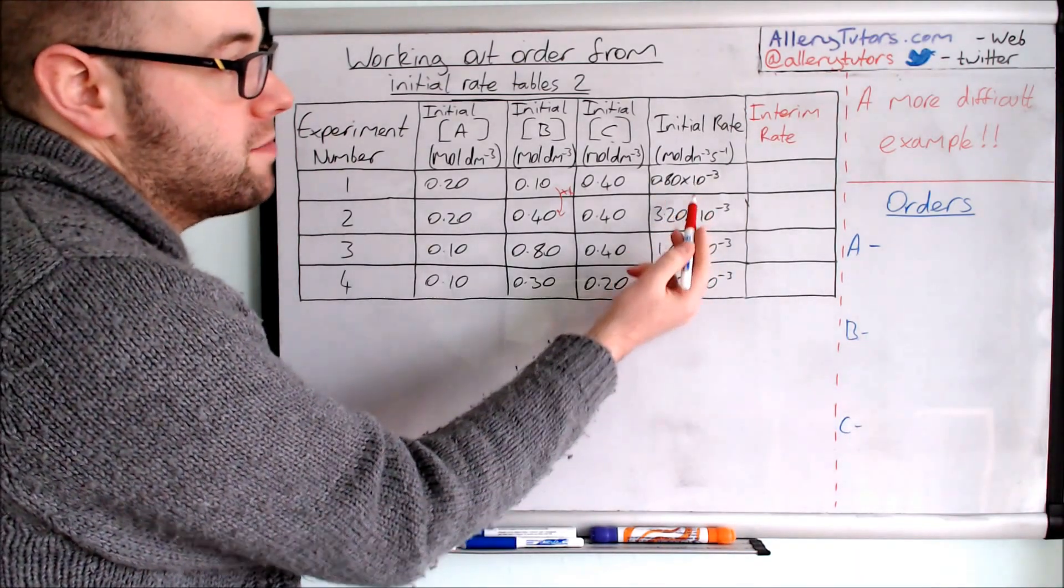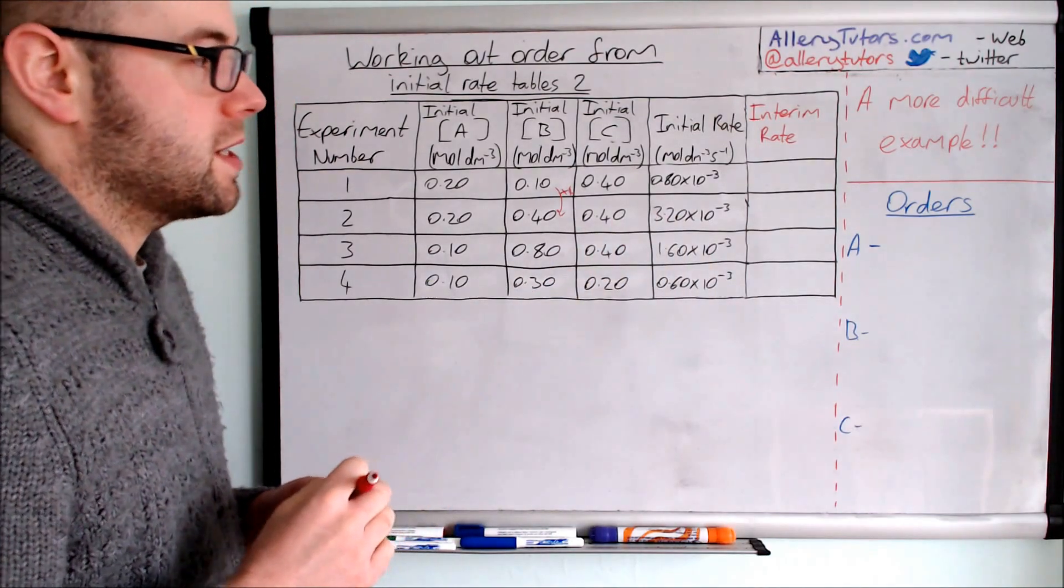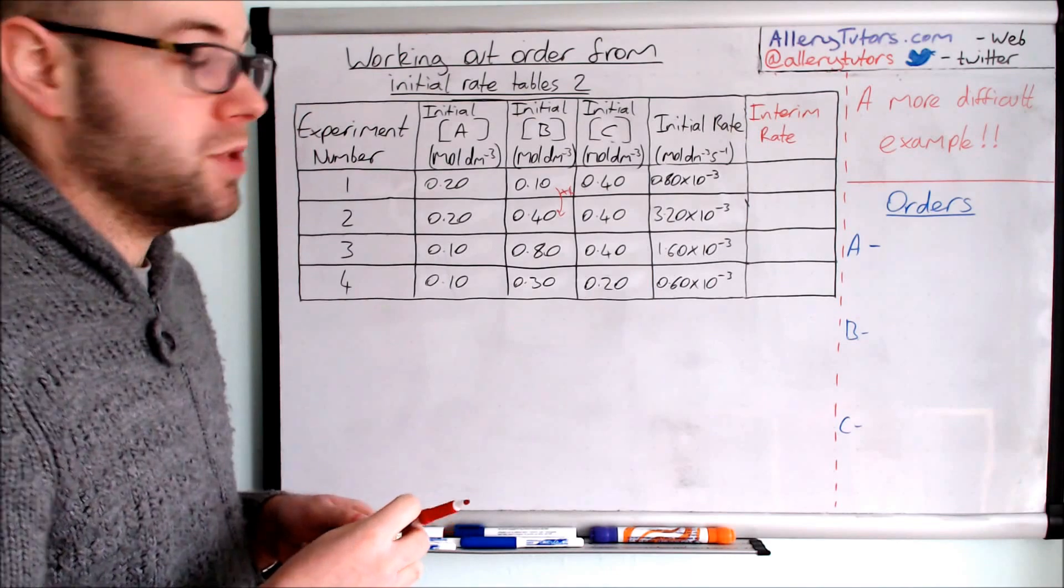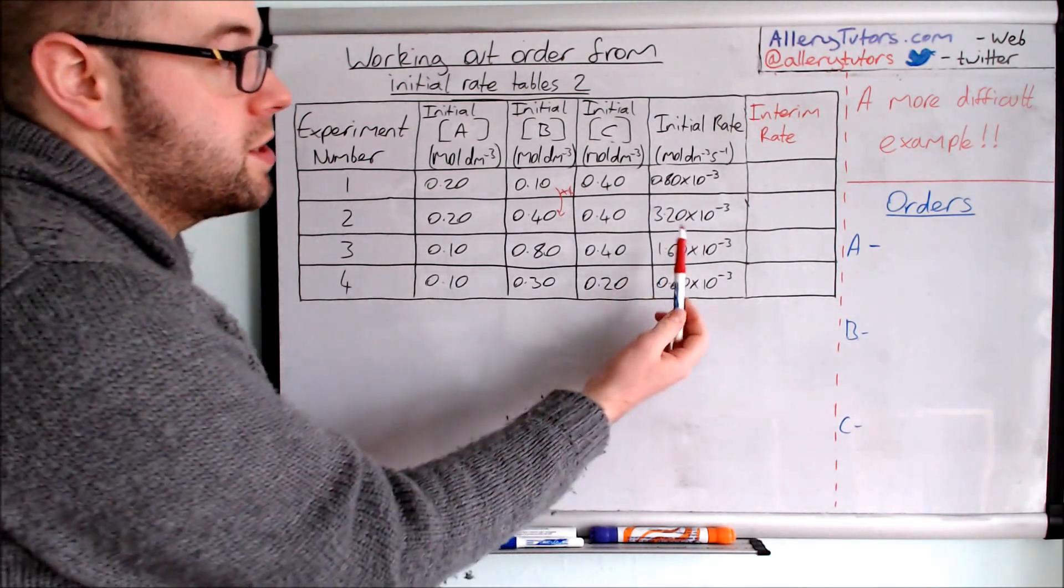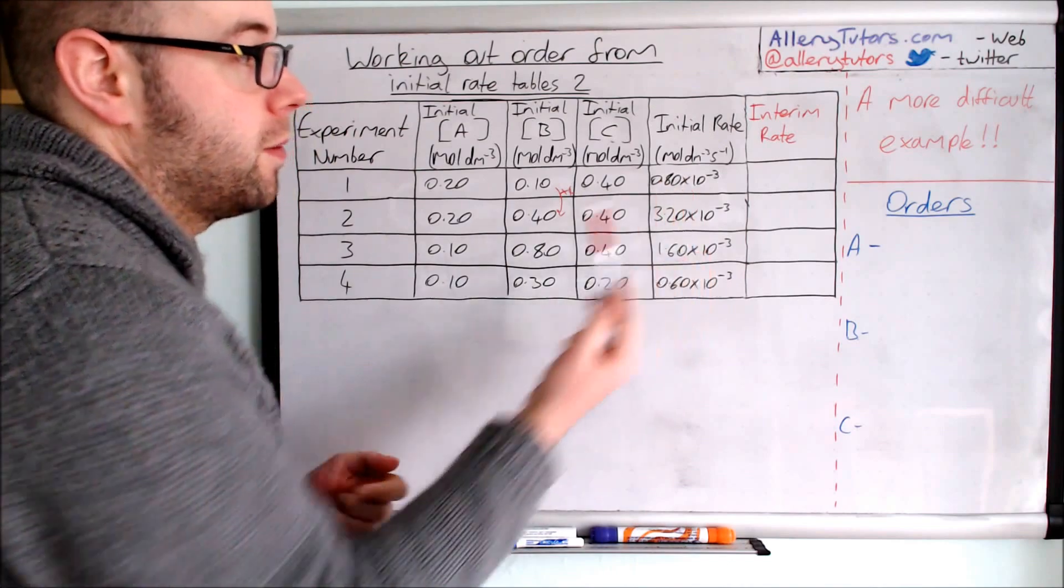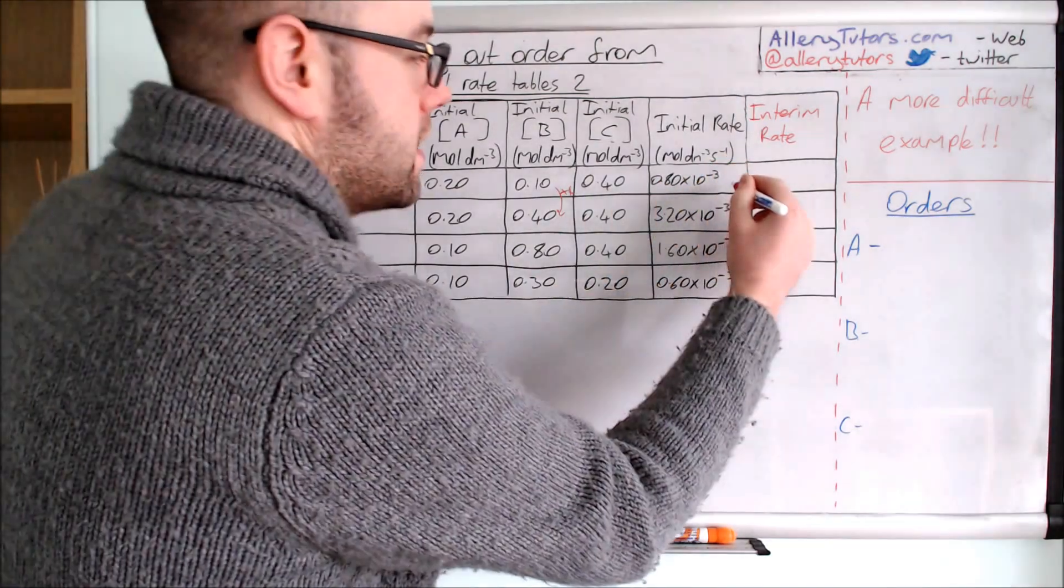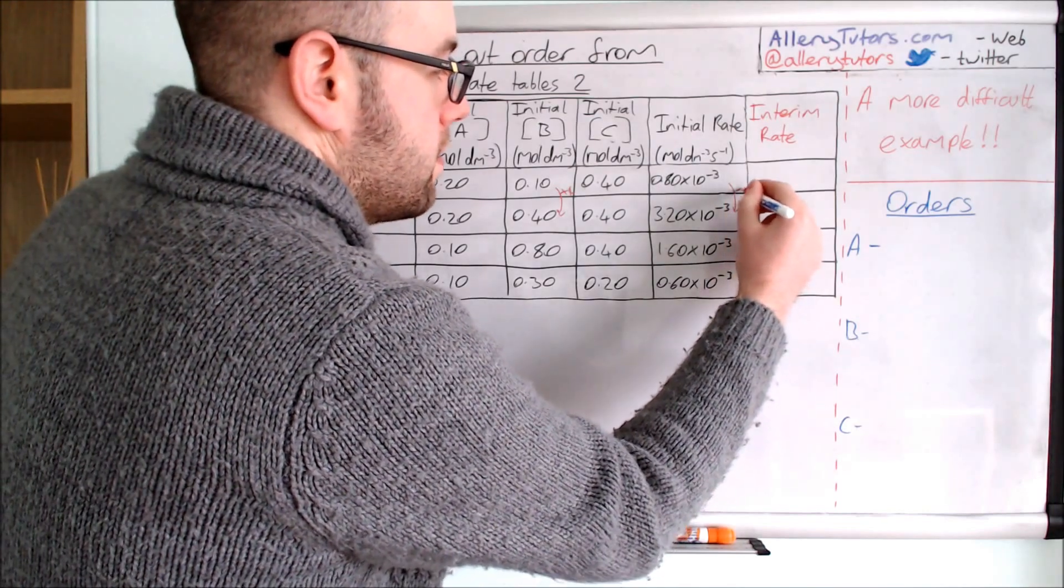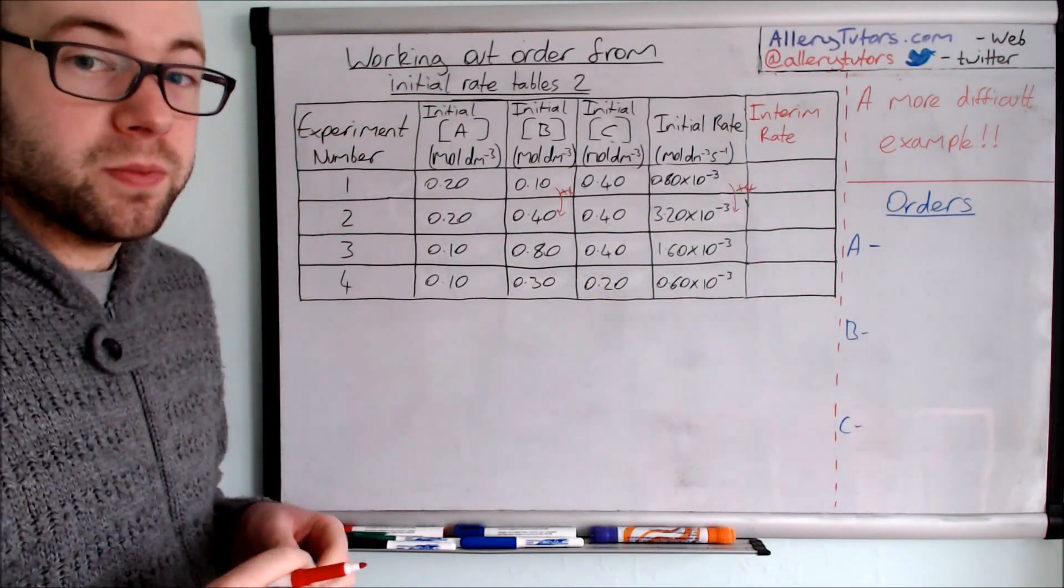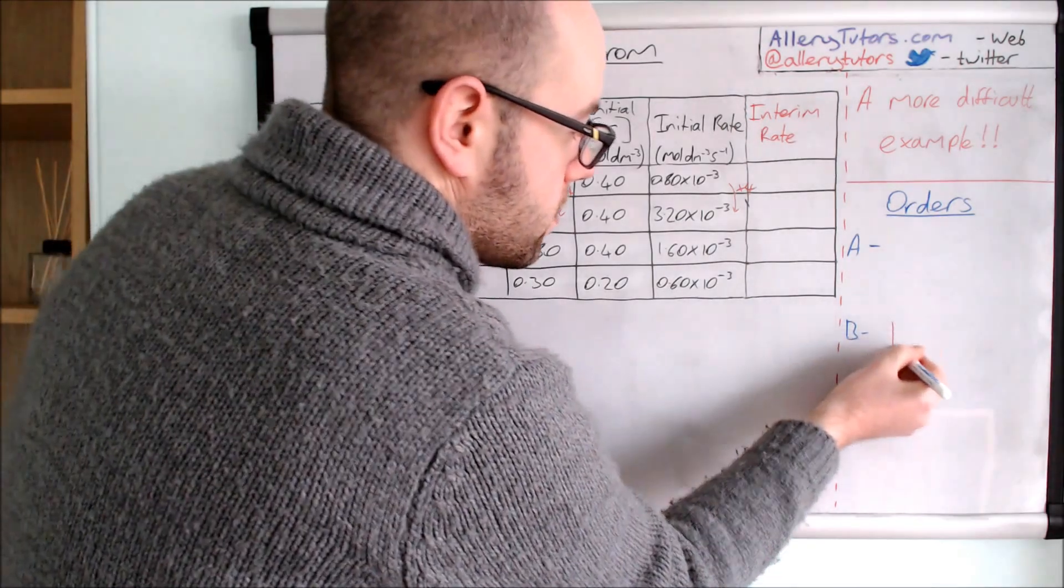We're going from 0.80 times 10 to the minus 3 to 3.20 times by 10 to the minus 3. This one is actually increasing by a factor of four. The way you can work that out is simply do 3.20 times by 10 to the minus 3 divided by 0.80 times by 10 to the minus 3, and it should tell you your factor, which here is 4. So because this one is multiplying by 4 as well, we've worked out our first order. So B is actually first order.